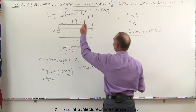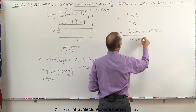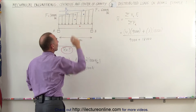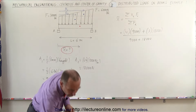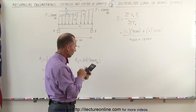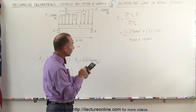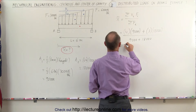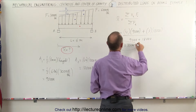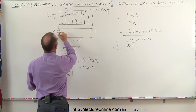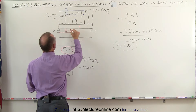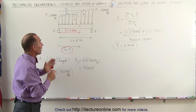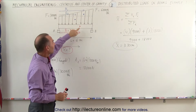We divide by the total force of every region combined: 9,000 newtons plus 18,000 newtons equals 27,000 newtons. Using a calculator: 4 times 9,000 plus 3 times 18,000, divided by 27,000 equals 3.33 meters. That's the x-coordinate of the centroid of the entire distributed load — the point through which the entire load appears to act.